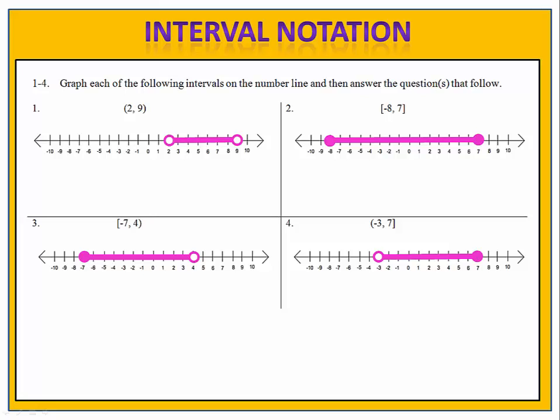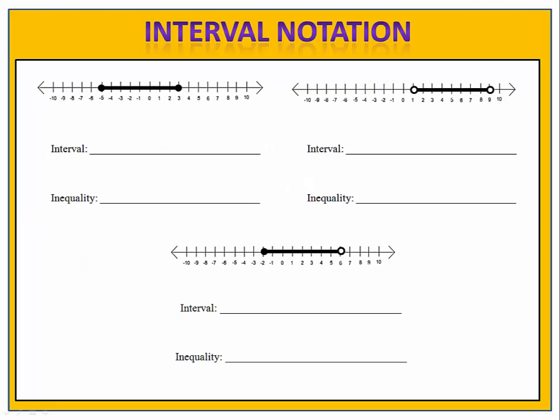Finally, from negative 3 to 7 in exercise 4: negative 3 is not included and 7 is included. The next exercises involve a number line that's given to you, and we're asked to write the set using interval notation and using an inequality. Can you write these sets? Please pause the video here and complete these exercises.